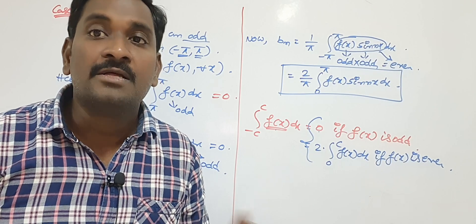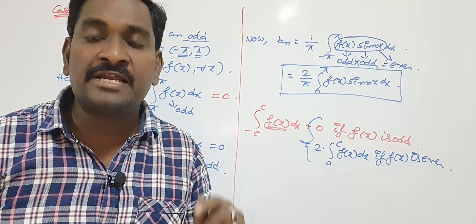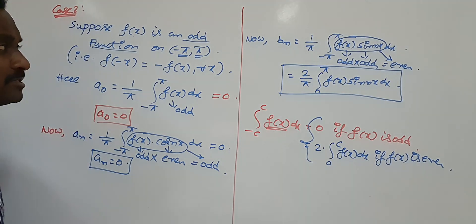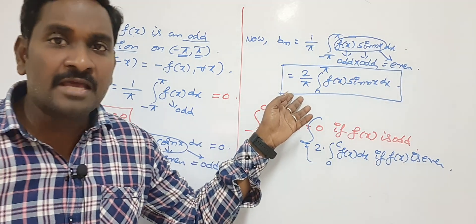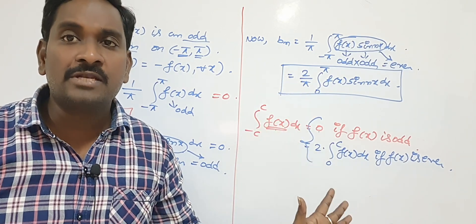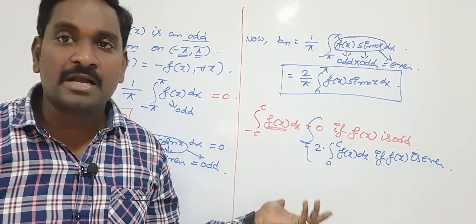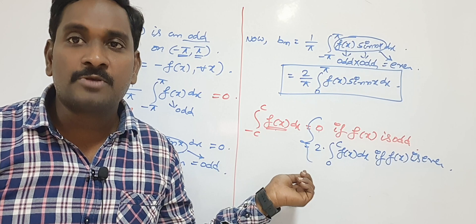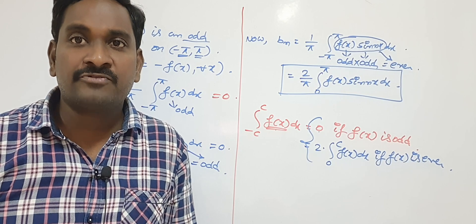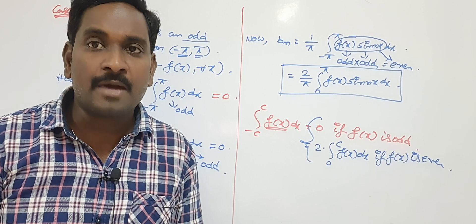Final conclusion: if f(x) is defined on (0, 2π), find a₀, aₙ, bₙ blindly. But if f(x) is defined on (-π, +π), check whether it is even or odd. If it is odd, a₀ and aₙ automatically become 0 — find only bₙ. If it is even, bₙ becomes 0 — find only a₀ and aₙ. In the next video I will give examples on even and odd functions on (-π, +π). Thank you very much.